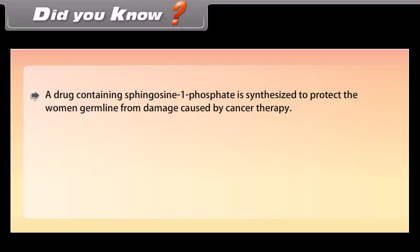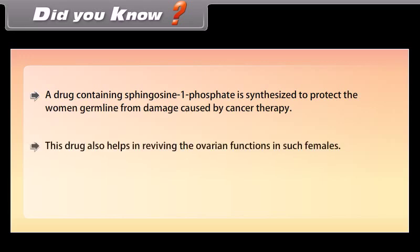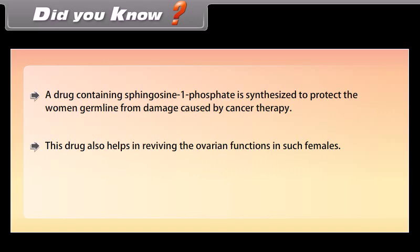Did you know? A drug containing sphingosine 1-phosphate is synthesized to protect the female germline from damage caused by cancer therapy. This drug also helps in reviving the ovarian functions in such females.